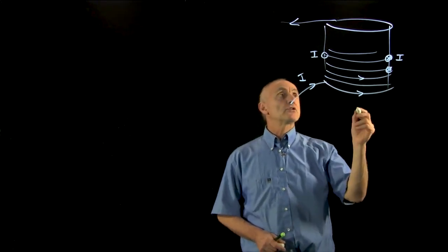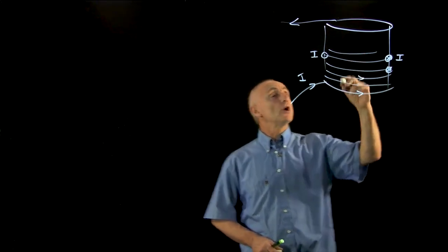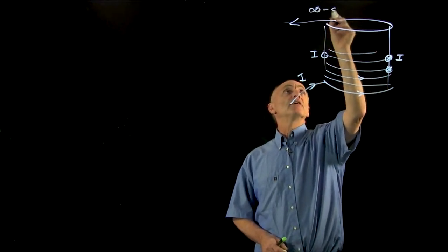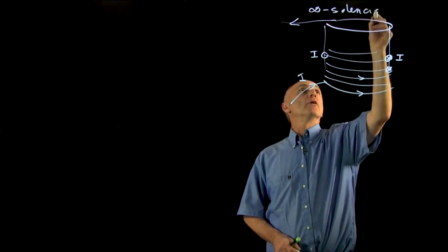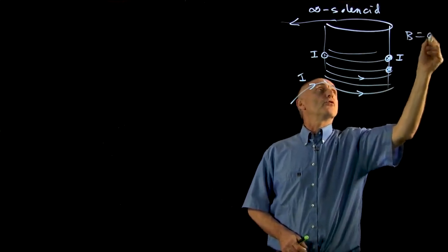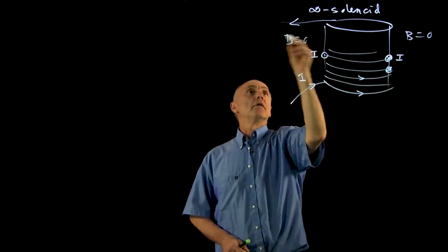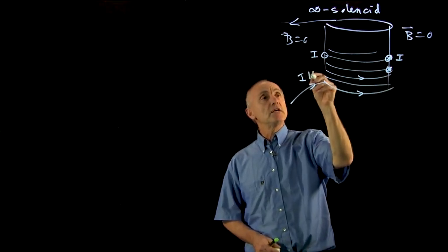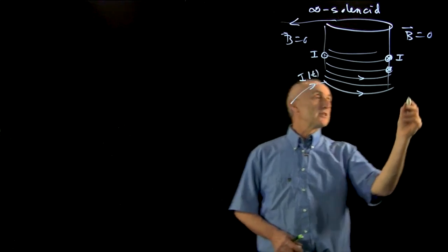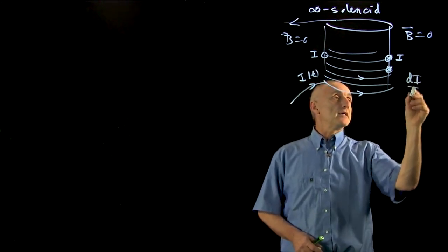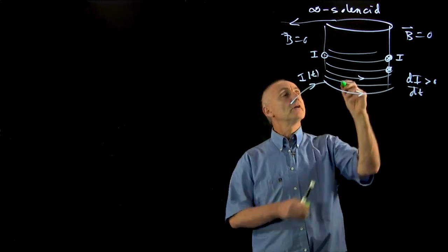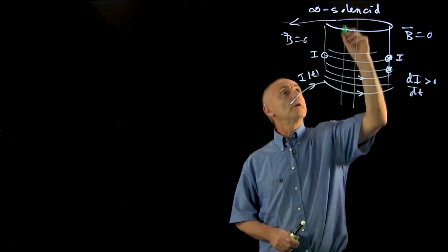What I'd like to do is, we're going to consider this to be an infinite solenoid, and that way, the B fields are zero on the outside. If I of t is changing in time, and for instance, let's say that di/dt is increasing, then we know that the magnetic field inside this solenoid will be increasing in time.